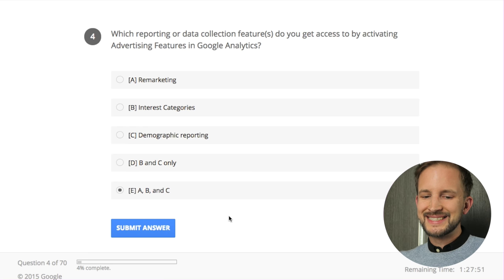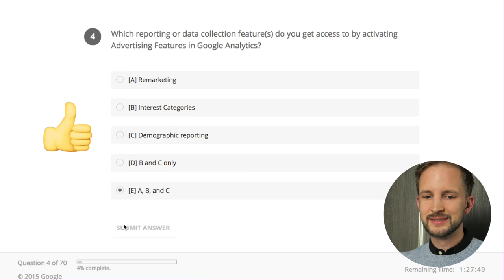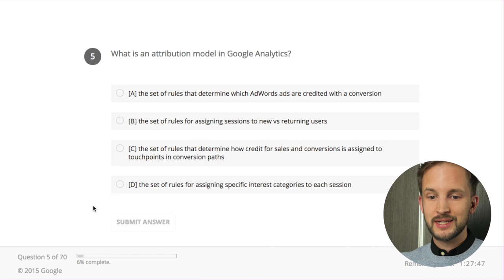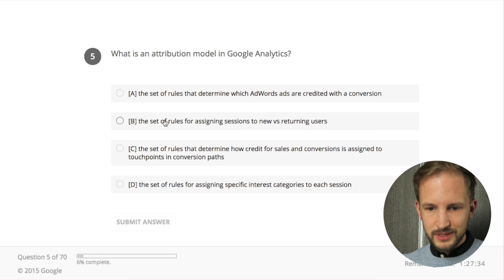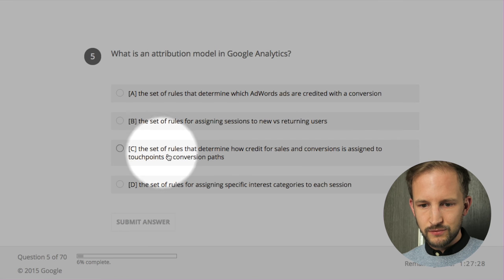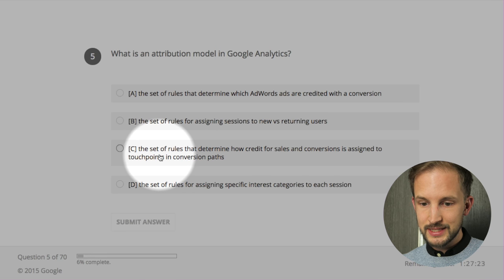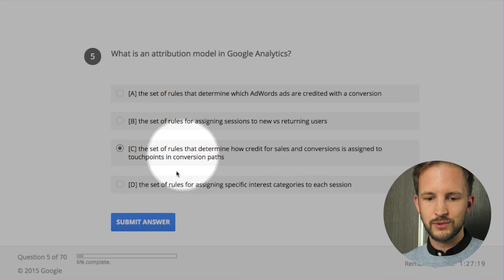I don't know - okay, all three! What is attribution modeling in Google Analytics? I know what that is - it's how you define the last click and what did it do. A set of rules that determine which AdWords gets credit - the set of rules that determine how credit for sales and conversions is assigned to touchpoints in conversion paths - yes! That's it - boom!